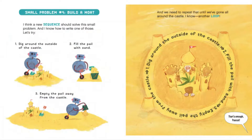I think a new sequence should solve this small problem, and I know how to write one of those. Let's try. Number one: dig around the outside of the castle. Two: fill the pail with sand. Three: empty the pail away from the castle. And we need to repeat until we've gone all around the castle — another loop! One: dig around the outside of the castle. Two: fill the pail with sand. Three: empty the pail away from the castle. That's enough, Pascal!